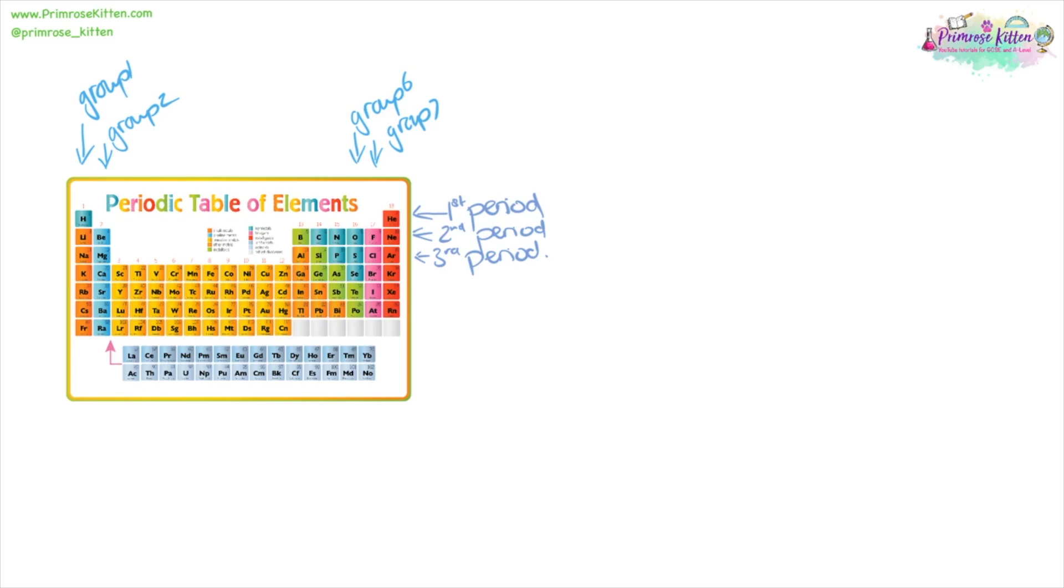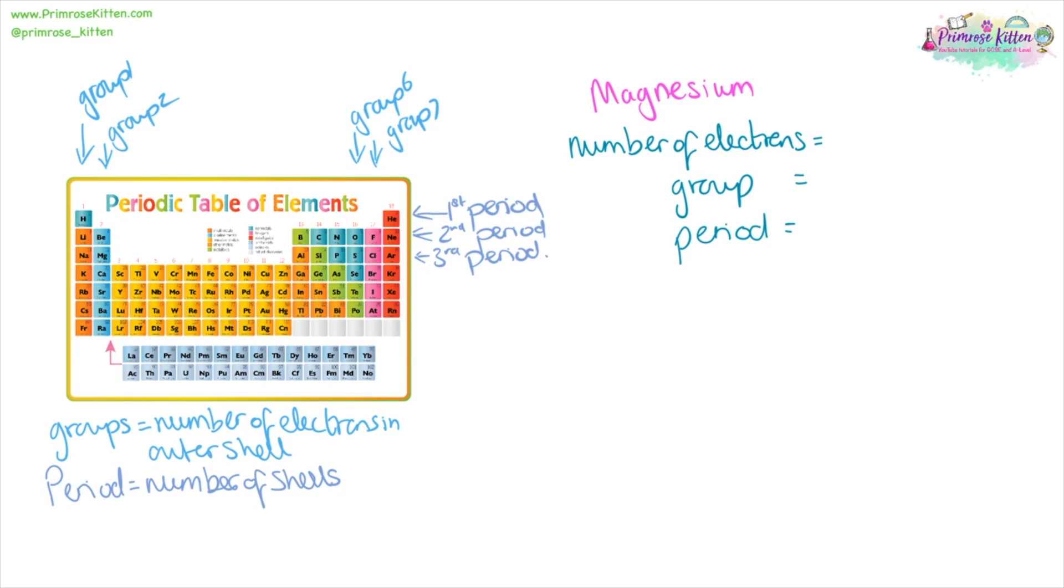Periods go across the periodic table. Here is our first period, the one that everyone always forgets because it's only got hydrogen and helium in. Here is our second period. Here is our third period. And periods relate to the number of shells that things have. They also remind us how many electrons are in each shell. In the first period there are two elements, which means there are going to be two electrons in that shell. In the second period there are eight elements, which means there are going to be eight electrons in that shell.